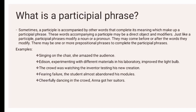Example: 'Singing on the chair, she amazed the audience.' Always remember that a participle phrase will not be called a participle phrase if there is no participle, so whenever you are looking for a participle phrase, there should be a participle. So singing is our participle, and on the chair is our prepositional phrase. Therefore, singing on the chair is our complete participle phrase, and it is modifying the pronoun she — who is singing on the chair.